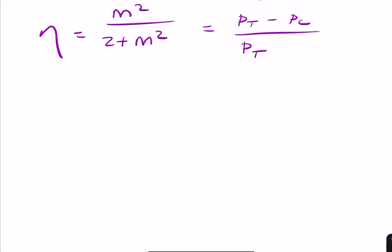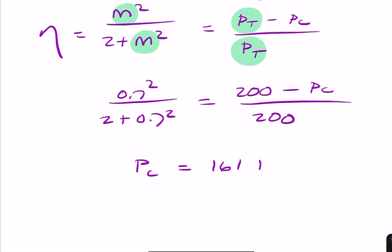Now, this is convenient because we know the total power and we know M. So we can just rearrange to find the carrier power. So we've got 0.7 squared over 2 plus 0.7 squared equals the total power minus PC over the total power. And you can rearrange that to find the carrier power. Again, it's just under 161 kilowatts.